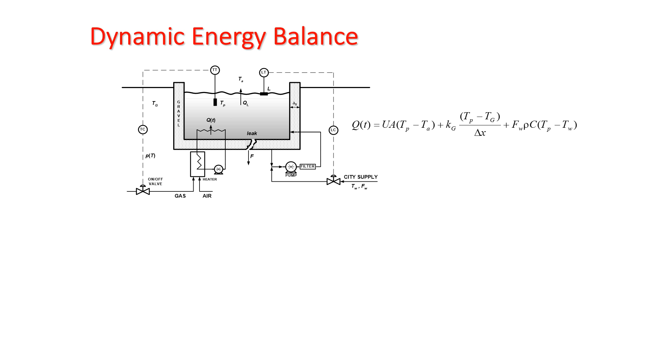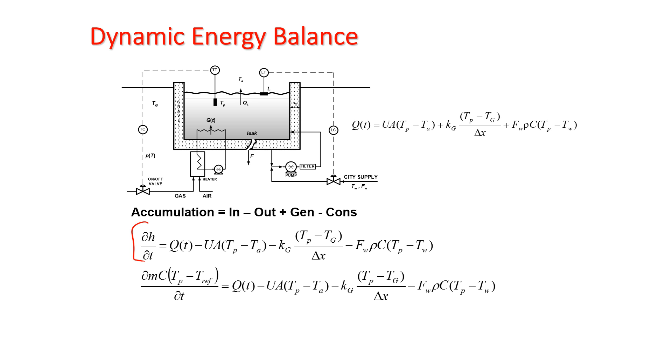First of all, we're going to start with a dynamic energy balance. Accumulation equals in minus out plus generation minus consumption. So I just wrote my energy balance here in terms of enthalpy. And then I'm going to relate it in terms of temperature and come up with an expanded form of my energy balance equation.